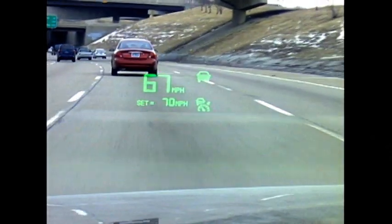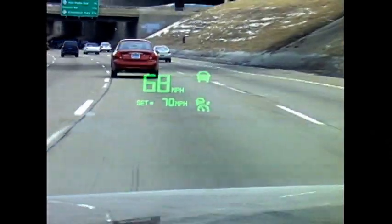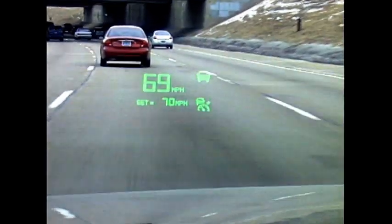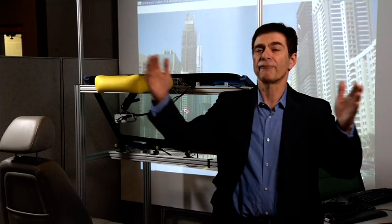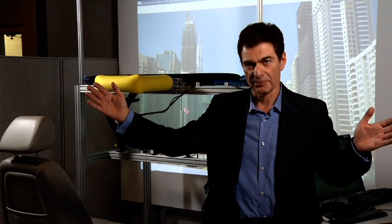Right now, head-up display technology is a very small area of the windshield that is illuminated by a head-up display. This system is actually a full windscreen head-up display.